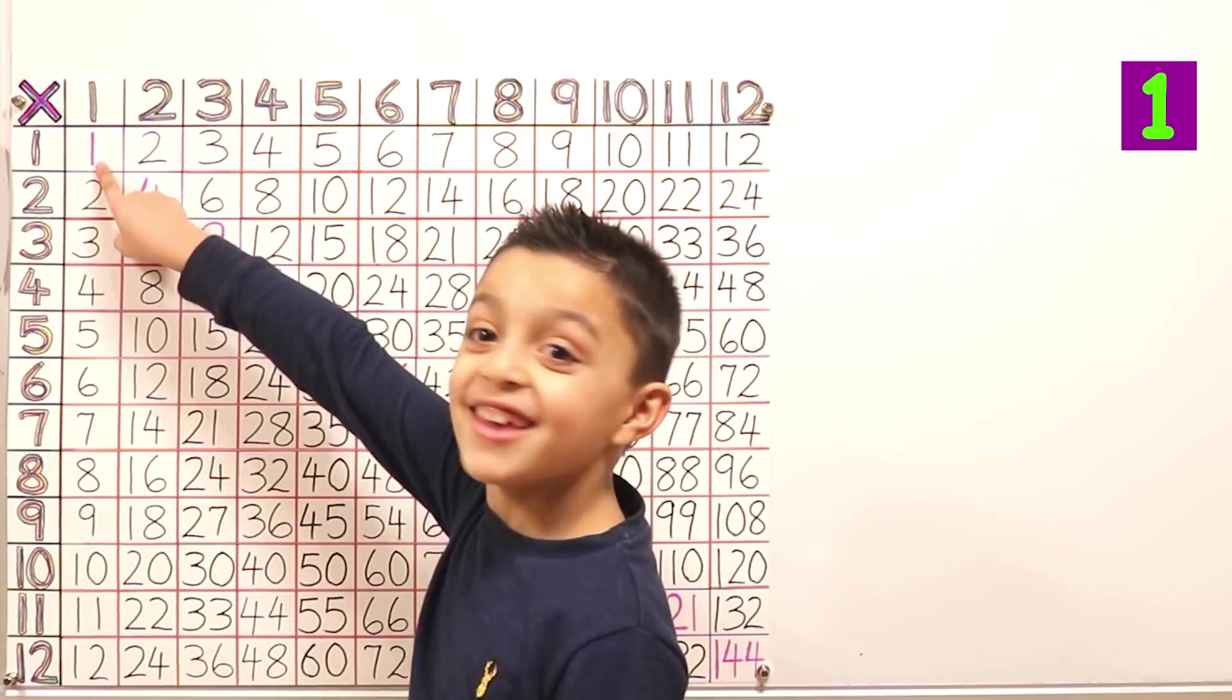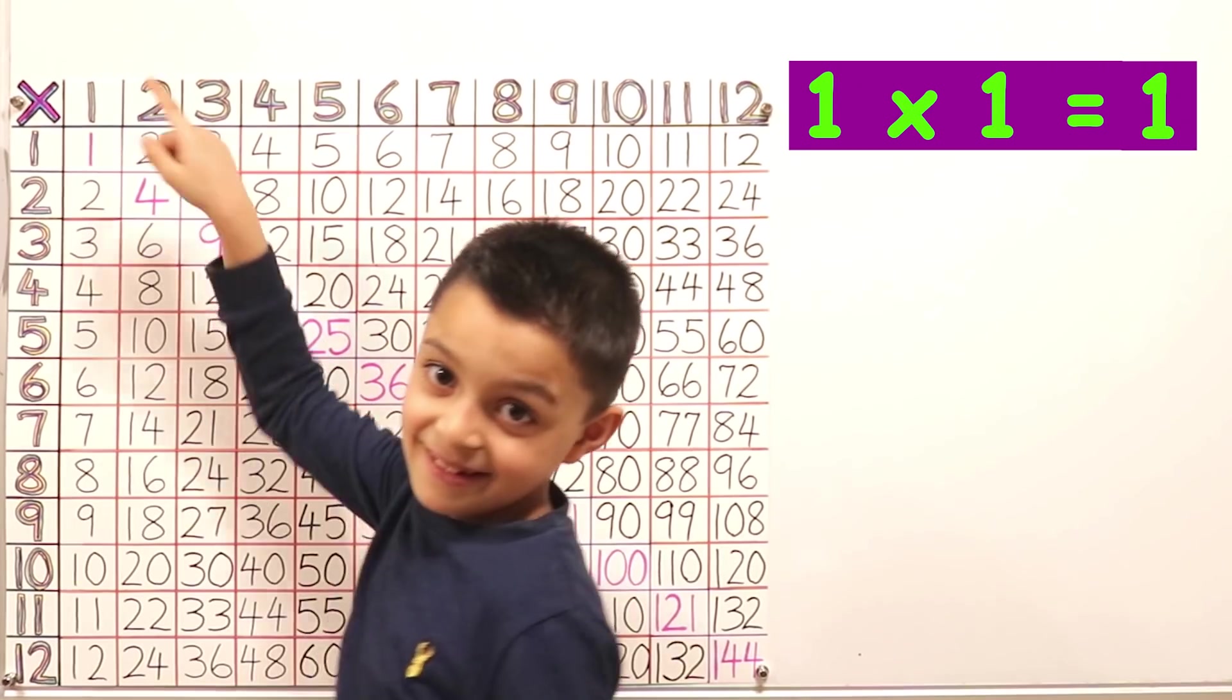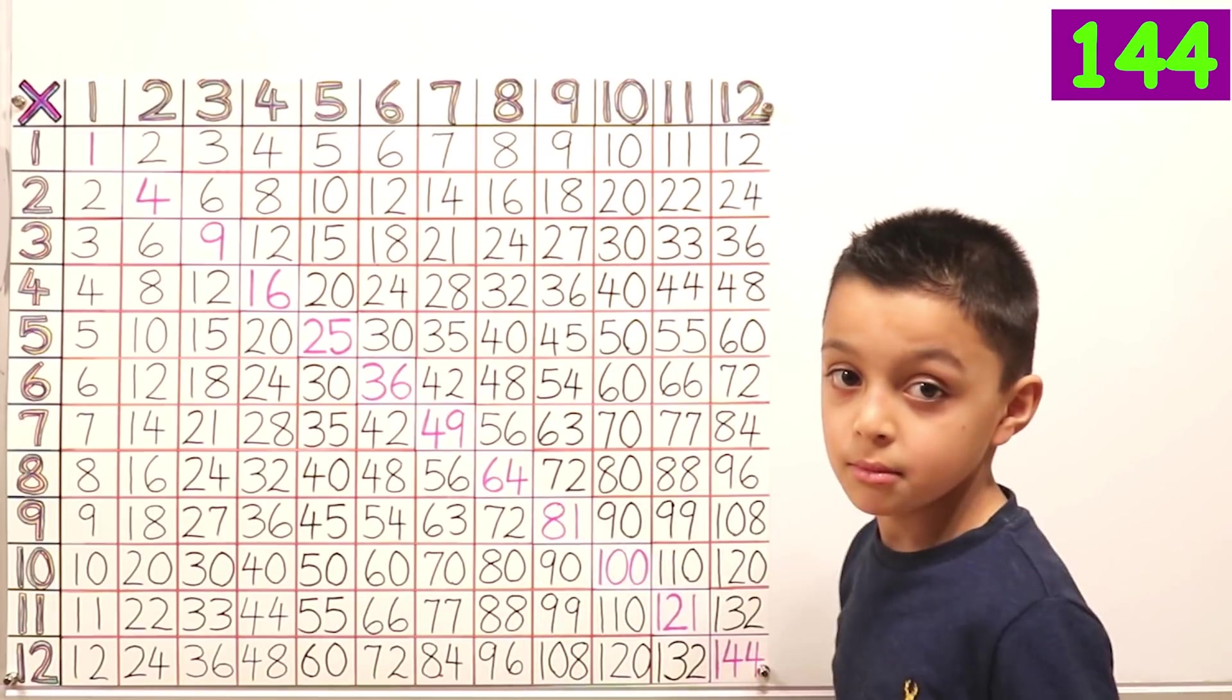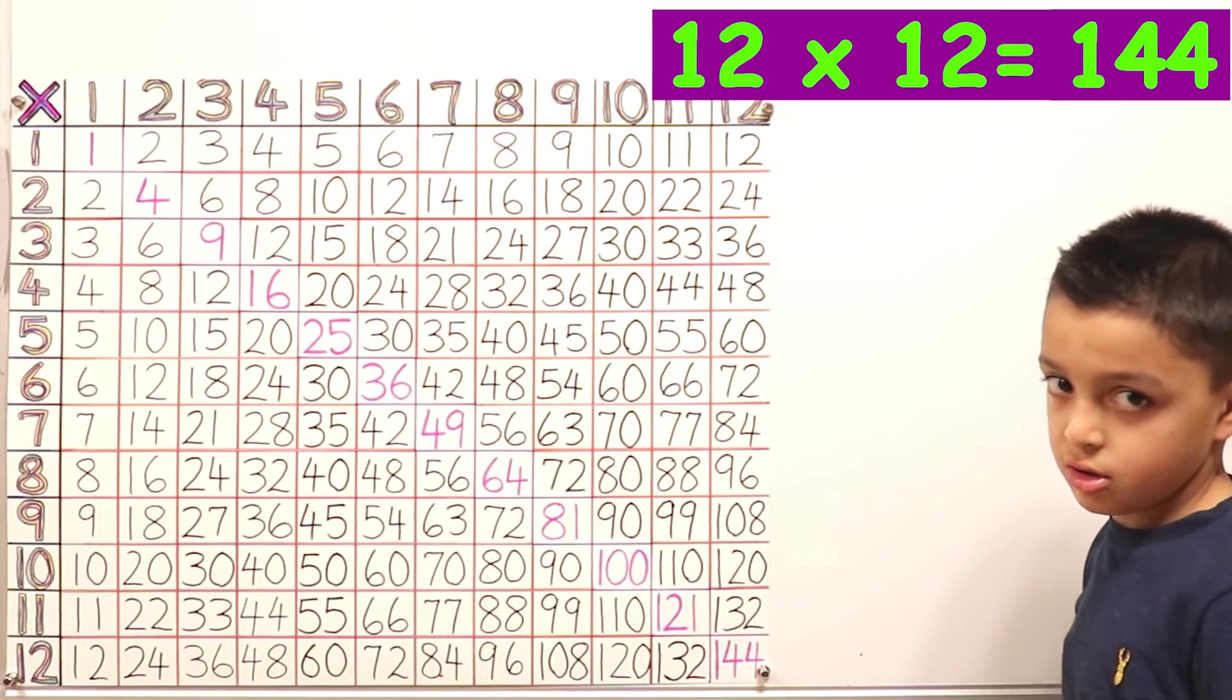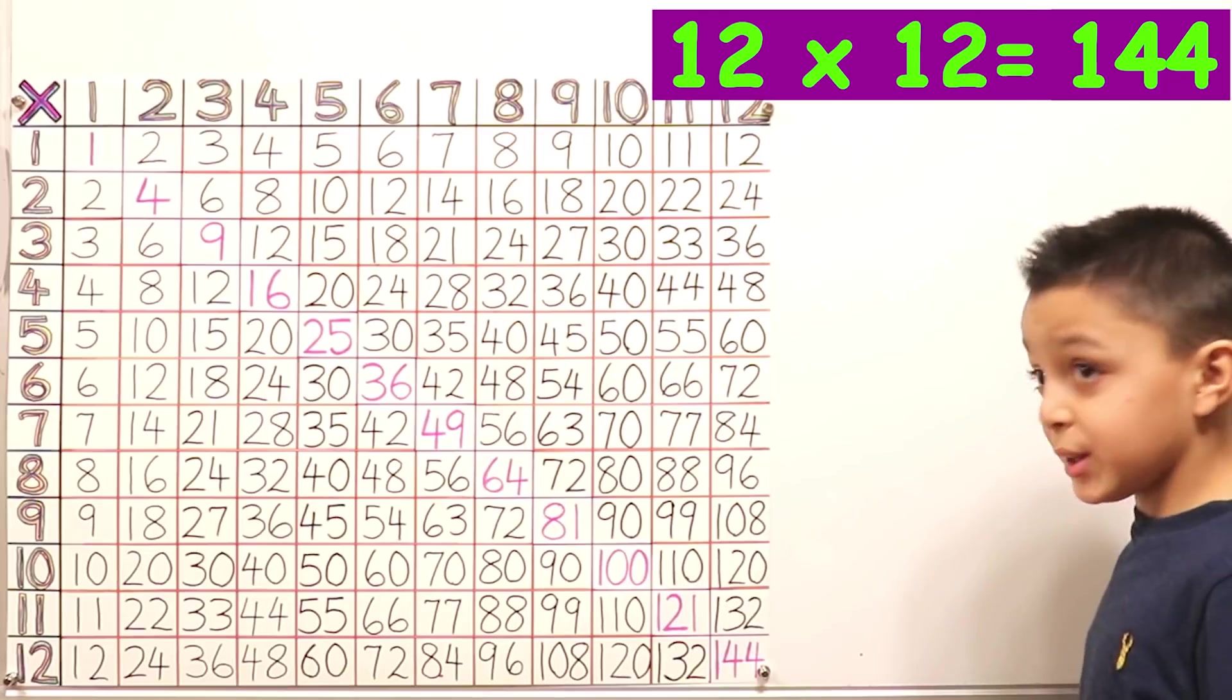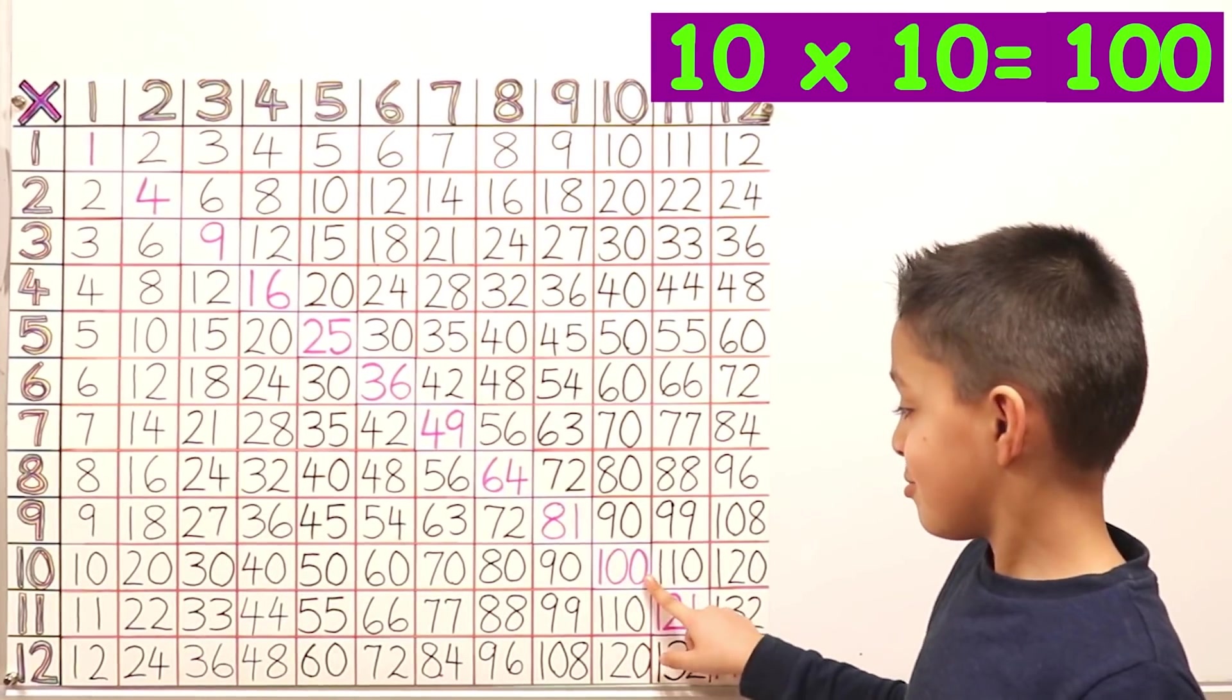So now, can you show us another square number and explain why it's a square number? Let's see. One. Because? One times one equals one. Yes. And another one? One hundred and forty-four. Okay. Can we see why is one hundred and forty-four a square number? Because twelve times twelve equals one hundred and forty-four. So when you times the number by itself, we get those fancy square numbers. Let's do one more. A hundred. Ten times ten equals a hundred. Okay. Very good. Alright.